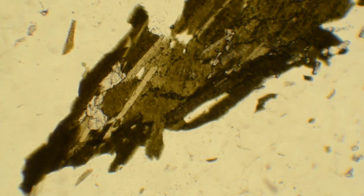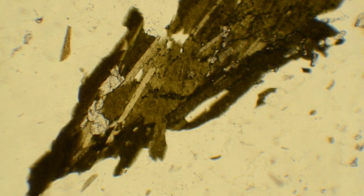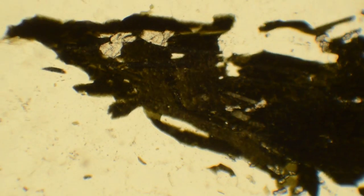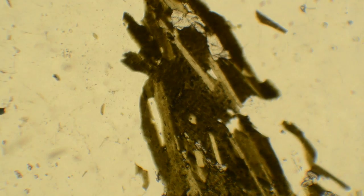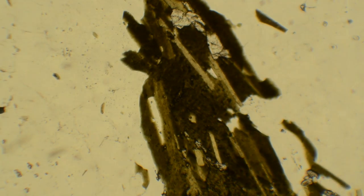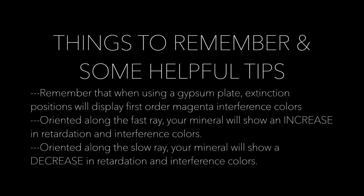With this, you can fully characterize a given section of a mineral. In the following videos, we will learn how to fully characterize a mineral considering all possible orientations in three dimensions. Here are some things to remember and some helpful tips. Remember that when using a gypsum plate, extinction positions will display first-order magenta interference colors. Oriented along the fast ray, your mineral will show an increase in retardation and interference colors. Oriented along the slow ray, your mineral will show a decrease in retardation and interference colors.